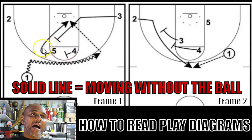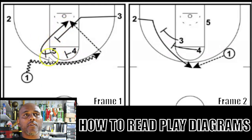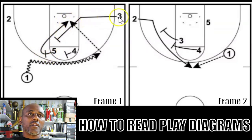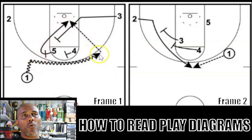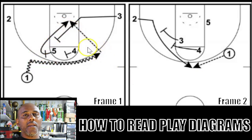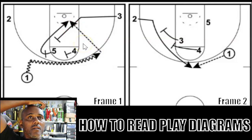Anytime you see a solid arrow, that's movement. So the five, after he sets this ball screen, cuts back to the basket. In fact, the number three, who was in the corner, set a back screen for the number five to cut to the basket. Once he gets to the basket, the one should be over here. That dotted line means he was attempting to pass the ball — that's the look.